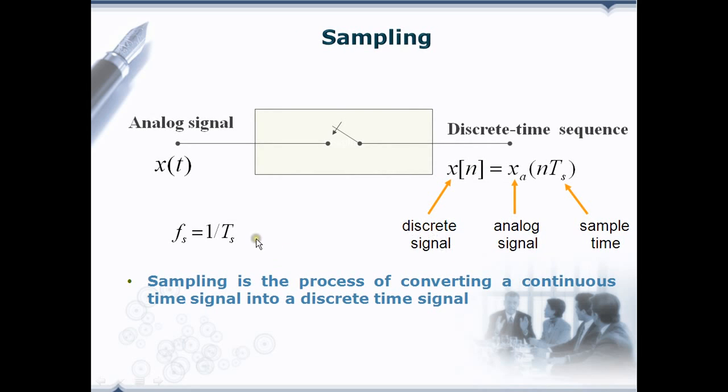So, what is sampling? Sampling is the process of converting a continuous analog signal into discrete time signal. It is periodic and we are taking samples at regular intervals of time. Ts is the sampling time. For every Ts, we are getting a new sample. The sampling frequency is nothing but 1 by Ts which is denoted by Fs.